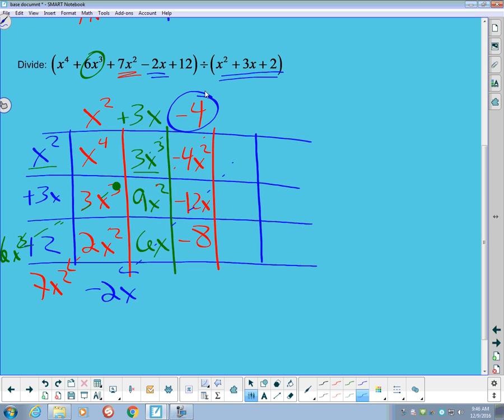Right now it's adding up to a negative 6x, so we need 4 more x's there to get us to the negative 2x. And on this diagonal, we need those to add up to positive 12. It's at a negative 8 right now, so I'm going to have to have a positive 20 on there. 20 minus 8 will give me the 12.